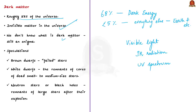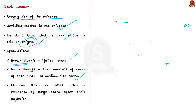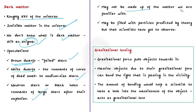We actually don't know what dark matter is. What it contains is still a mystery to scientists. In many ways scientists know more about what dark matter is not than what it actually is. Scientists speculate that dark matter could possibly be brown dwarfs — failed stars that never ignited because they lacked the mass needed to start burning. They also speculate it could be white dwarfs, the remnants of dead small to medium-sized stars, or neutron stars or black holes, the remnants of large stars after they explode. They even speculate it may not be made of matter we are familiar with at all, but possibly particles predicted by theory that scientists are yet to observe. All these remain mere speculations with no concrete proofs yet.